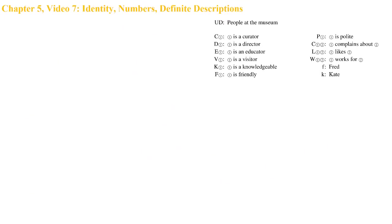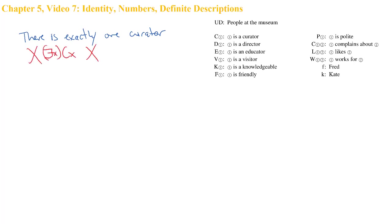Now we've seen how to do, in addition to 'at least one' with the simple existential quantifier, 'at least two,' 'at least three,' and we can extrapolate to 'at least four' and so on, although those symbolizations get mighty long and unwieldy. What if we want to say 'exactly one' or 'exactly two' and so on? A simple existential quantifier won't work because that says 'at least one' — so there could be two, three, four, and so on.